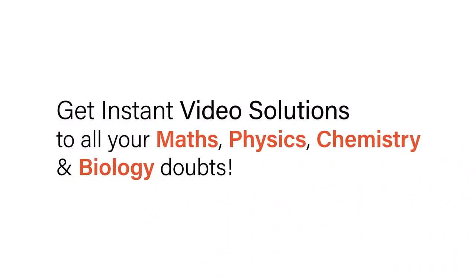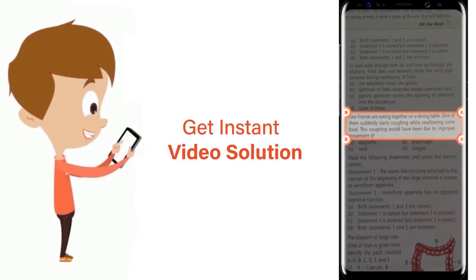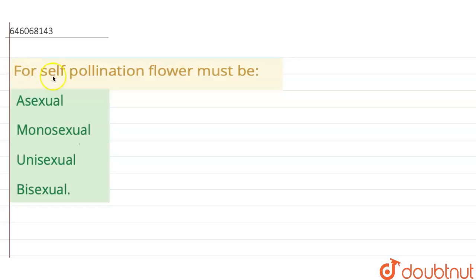With Doubtnet, get instant video solutions to all your math, physics, chemistry, and biology doubts. Just click the image of the question, crop it, and get instant video solution. Download Doubtnet app today. Here the question is for self-pollination: